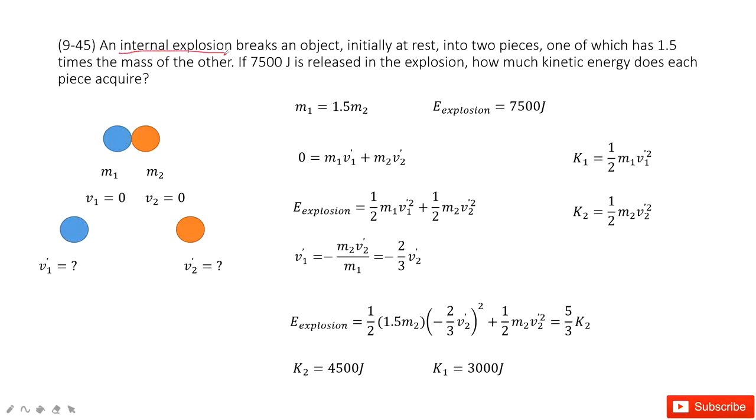It is an internal explosion, meaning no external force acting. Momentum is conserved. We find one part is 1.5 times the mass of the other, so we consider m1 is 1.5 times m2.